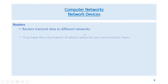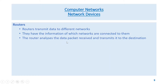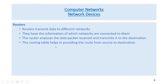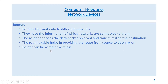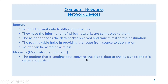Network devices: Routers transmit data to different networks. They have information about which networks are connected to them. The router analyzes the data packet received and transmits it to the destination. The routing table helps in providing the route from source to destination. Routers can be wired or wireless.